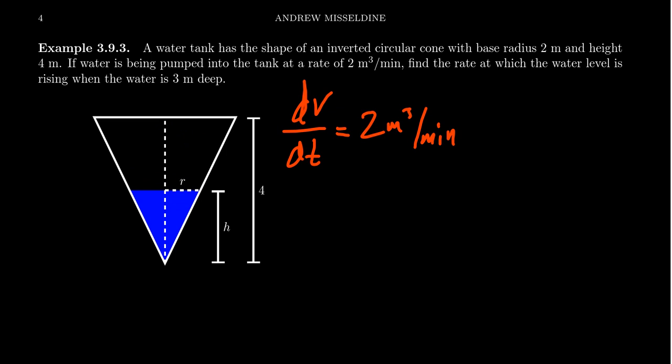The volume is increasing, but the rate at which the water level is rising is not constant in this situation. Words like 'rate' and 'rising' are cues indicating a question about derivatives — rising represents a change in height. So we want to find the derivative of height with respect to time. Let V equal the volume, measured in cubic meters at time t.